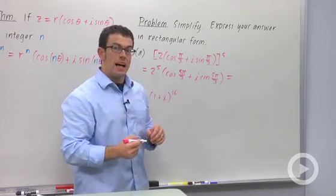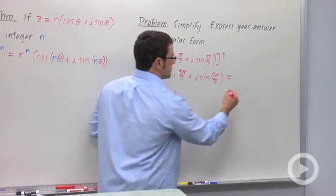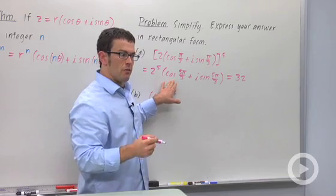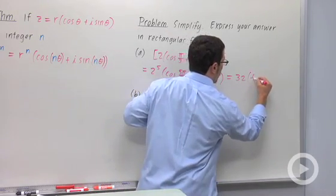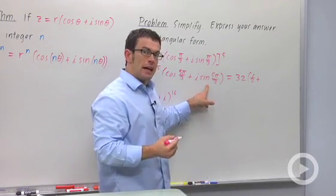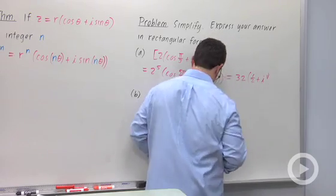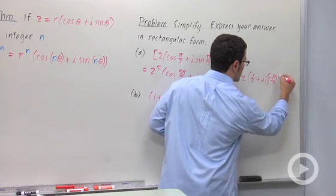And I have to put this in rectangular form. So this is going to be 32 times, what's the cosine of 5 pi over 3? It's 1 half. 1 half plus, and the sine of 5 pi over 3 is negative root 3 over 2. So i times negative root 3 over 2.